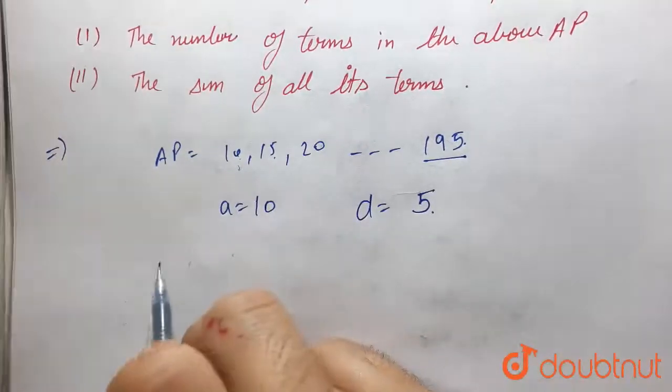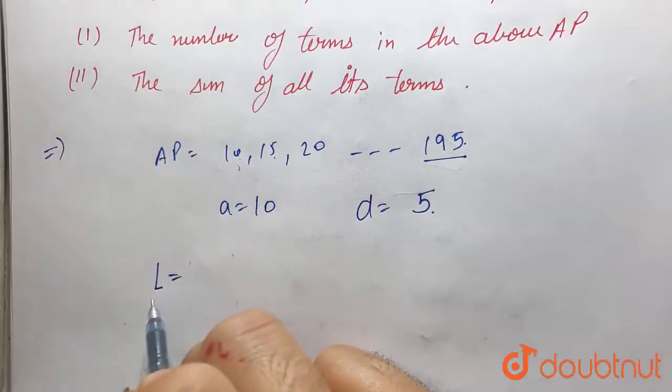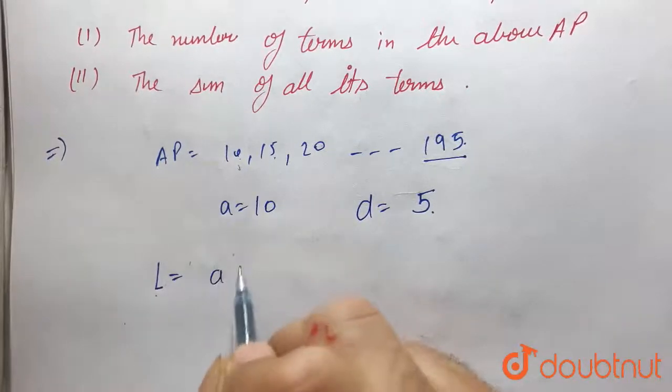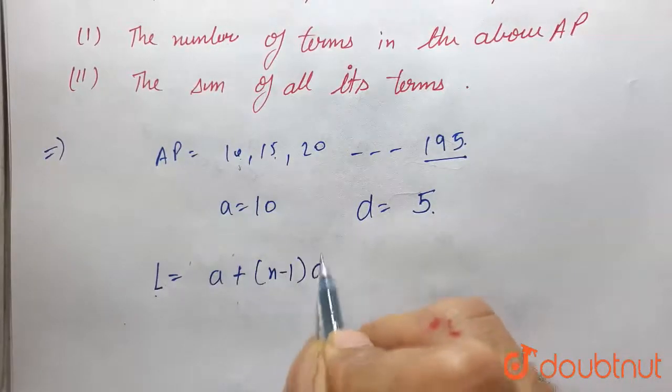We know that the last term can be found by L is equal to a plus n minus 1 into d.